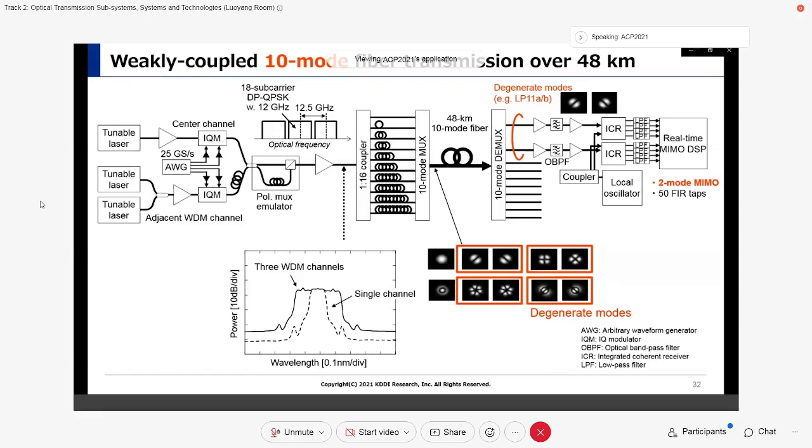The 10-mode multiplexed signal was transmitted over 48 km. After 48 km transmission, the 10-mode multiplexed WDM signals were mode demultiplexed by the 10-mode demultiplexer. Two degenerate modes were selected, such as LP11A and B, and they were wavelength demultiplexed by optical band-pass filters. After sub-carrier demultiplexing, the signals are received in parallel by integrated coherent receivers and equalized by real-time MIMO DSP for degenerate two modes.